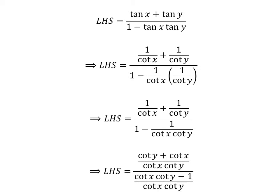Adding the fractions in the numerator and subtracting the fractions in the denominator gives us: left-hand side equals cotangent of y plus cotangent of x upon cotangent of x times cotangent of y, upon cotangent of y minus 1 upon cotangent of x times cotangent of y.